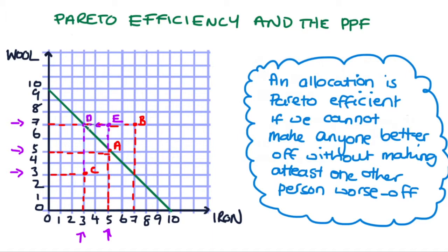That is, if we really wanted to make seven tons of wool and we were initially producing at point A, we would have to decrease the amount of iron that we were producing.